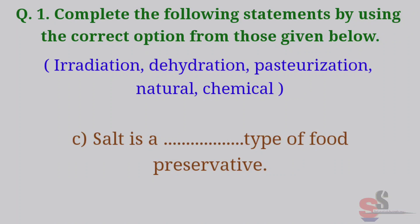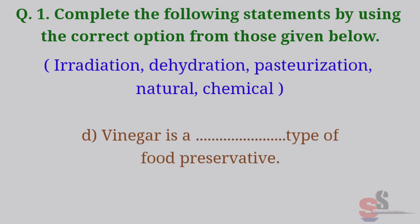C. Salt is a Natural type of food preservative. D. Vinegar is a Chemical type of food preservative.